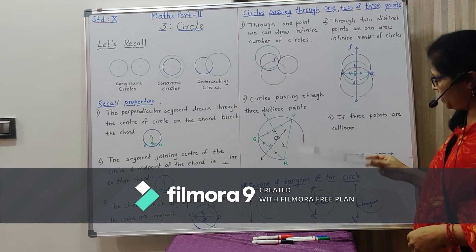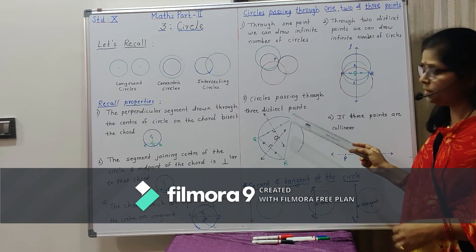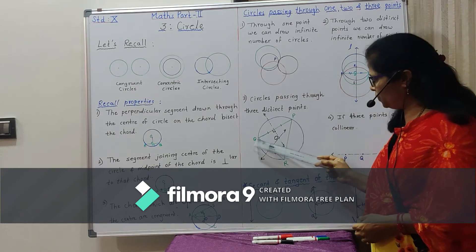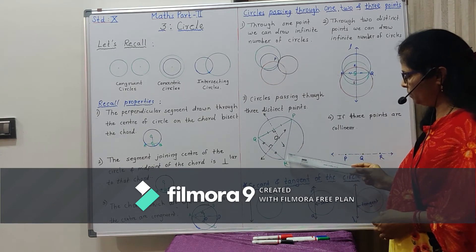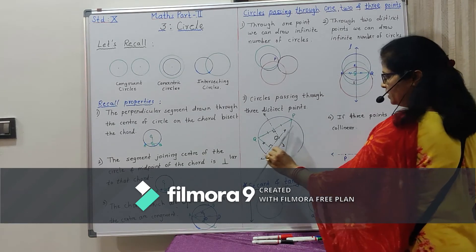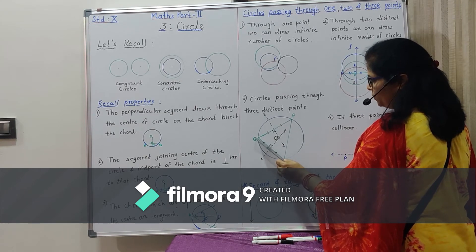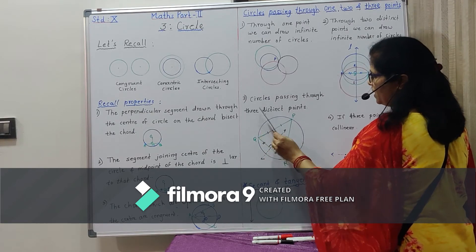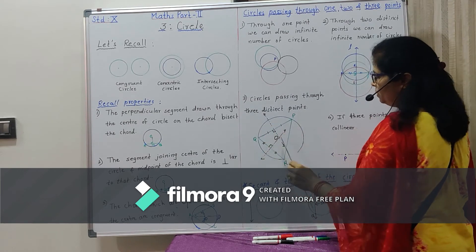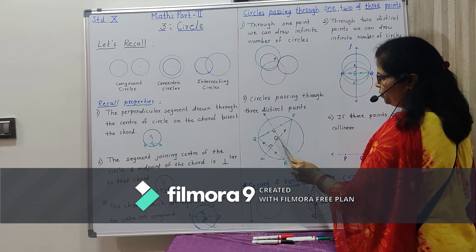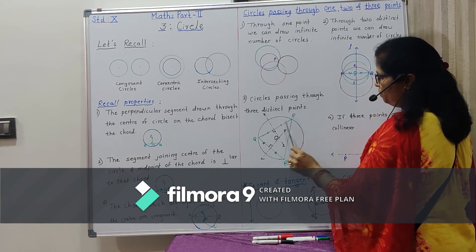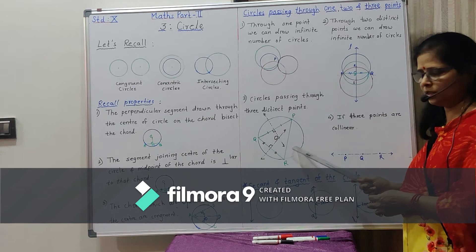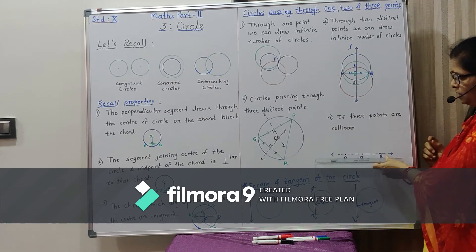Now if three non-collinear points P, Q, and R are given, we can draw only one circle passing through them. Draw segments QR, PQ, and PR to form triangle PQR. Draw the perpendicular bisectors of any two sides — here, the perpendicular bisector of side QR and the perpendicular bisector of side PQ. These two bisectors intersect at point O. Take O as the center and OP as the radius; we draw a circle passing through P, Q, and R. This is the unique circle through the three points.